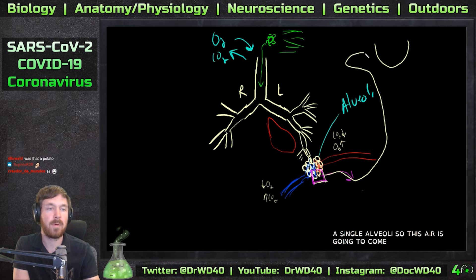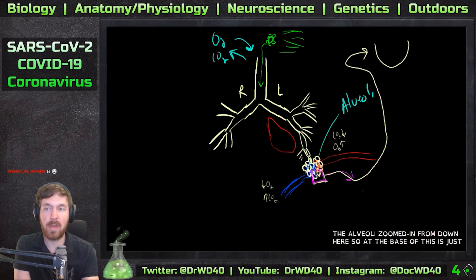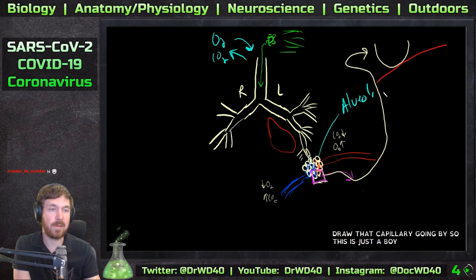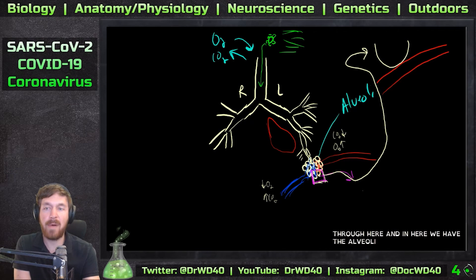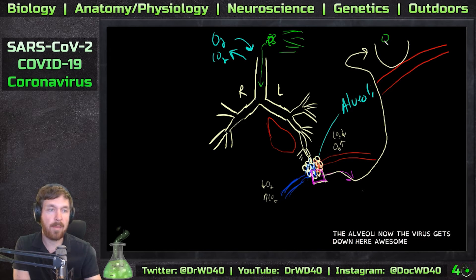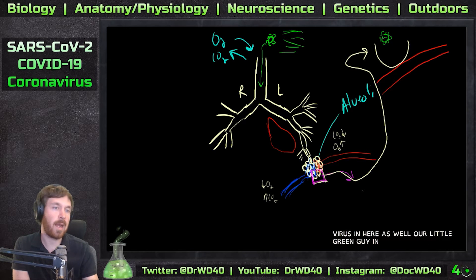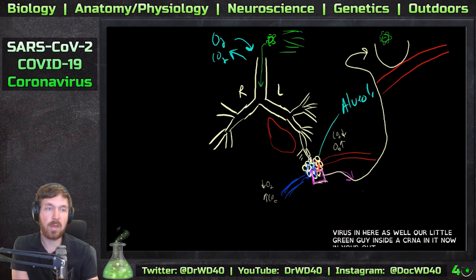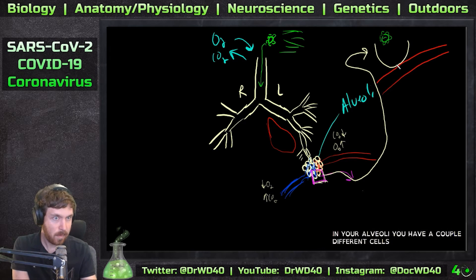At the base of this, let's just draw that capillary going by - so this is just a blood vessel going through here, and in here we have the alveoli. The virus gets down here, so now we have the virus in here as well - our little green guy. Inside it has the RNA in it.